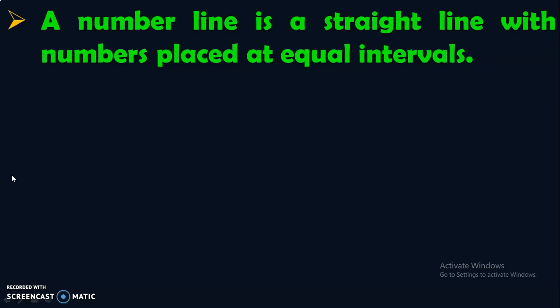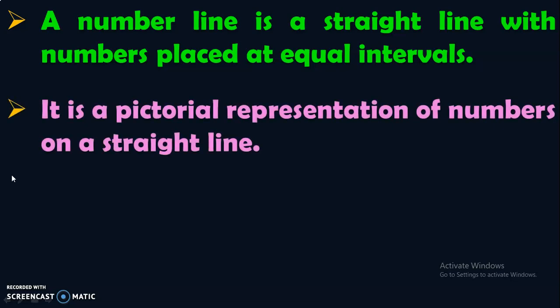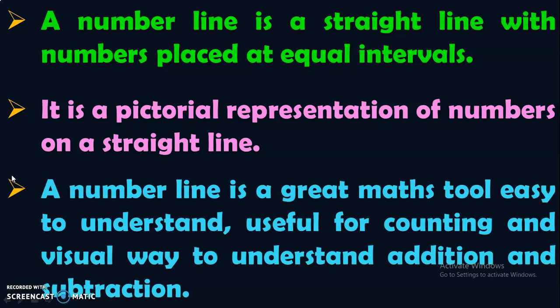A number line is a straight line with numbers placed at equal intervals. It is a pictorial representation of numbers on a straight line. A number line is a great math tool, easy to understand, useful for counting, and a visual way to understand addition and subtraction.